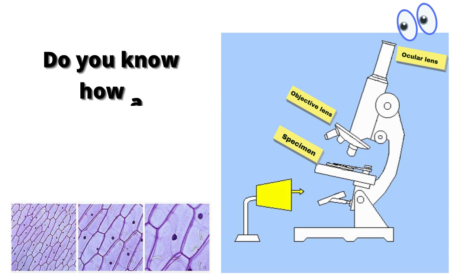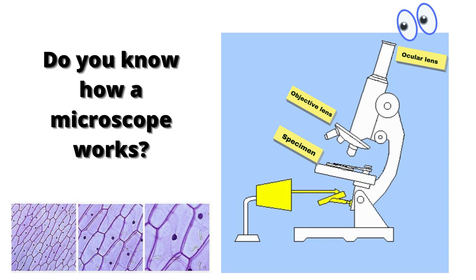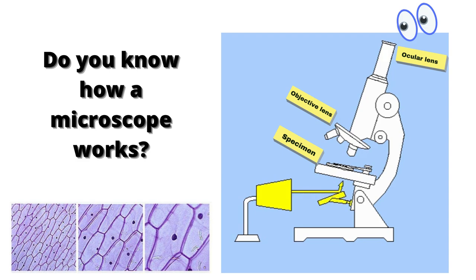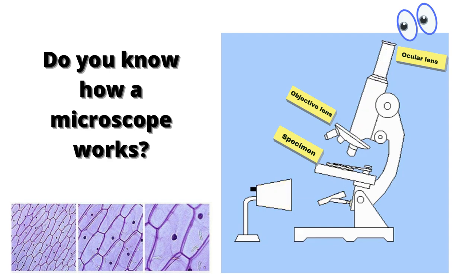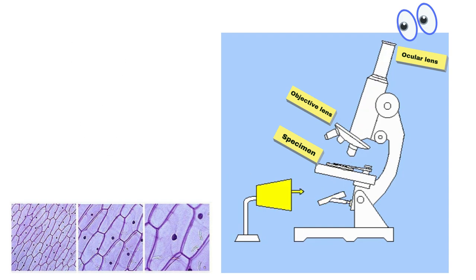Do you know how a microscope works to produce a well-qualified image? First, light must pass through the specimen. The objective lens receives that light and then brings it to a focus inside the microscope tube, so we can observe the magnified image of the specimen.